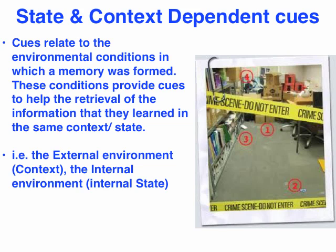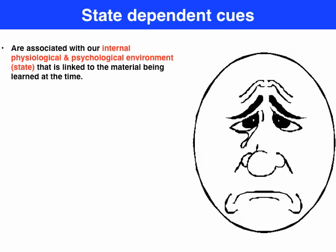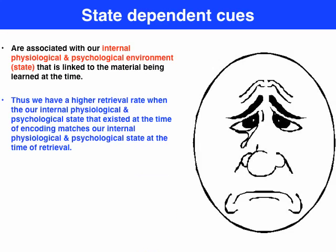State-dependent cues refers to our internal environment, whether it be our physiological or psychological environment. We have a significantly higher retrieval rate when we can match our internal, physiological, and psychological state at retrieval time to our internal, physiological, and psychological state during the actual learning time.